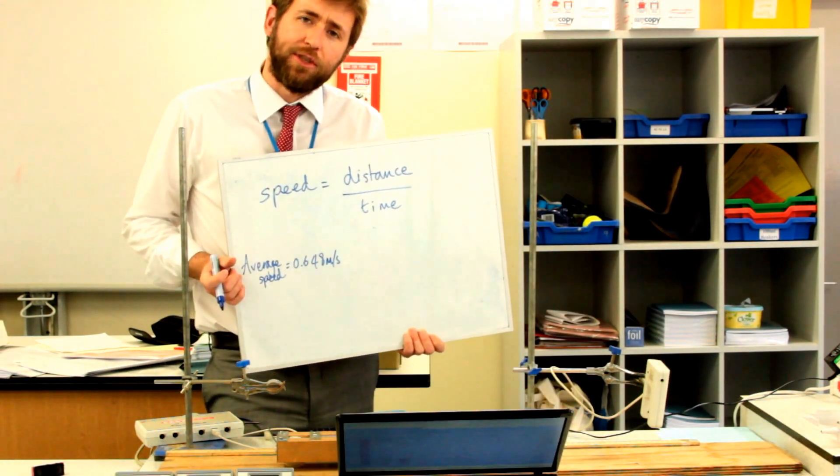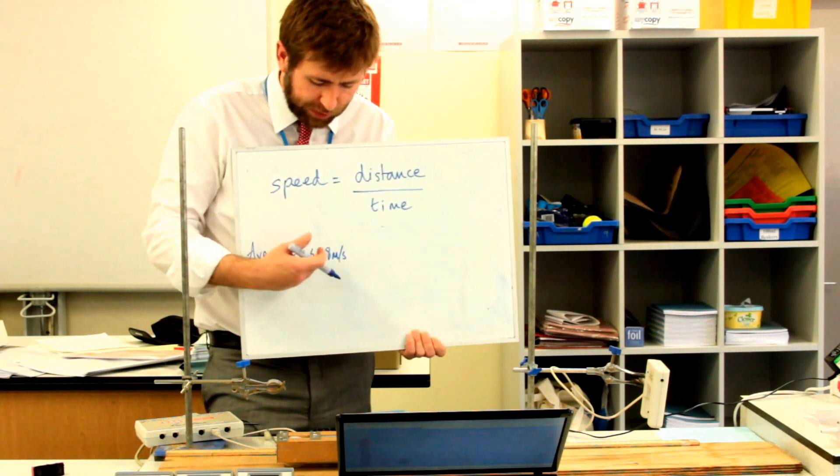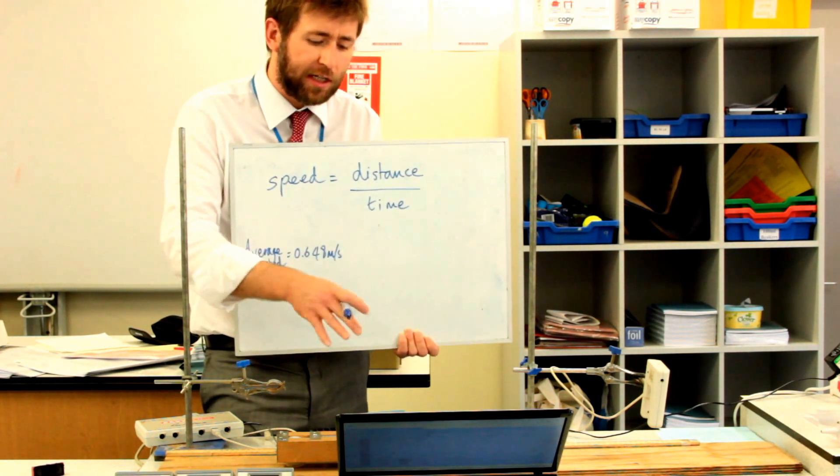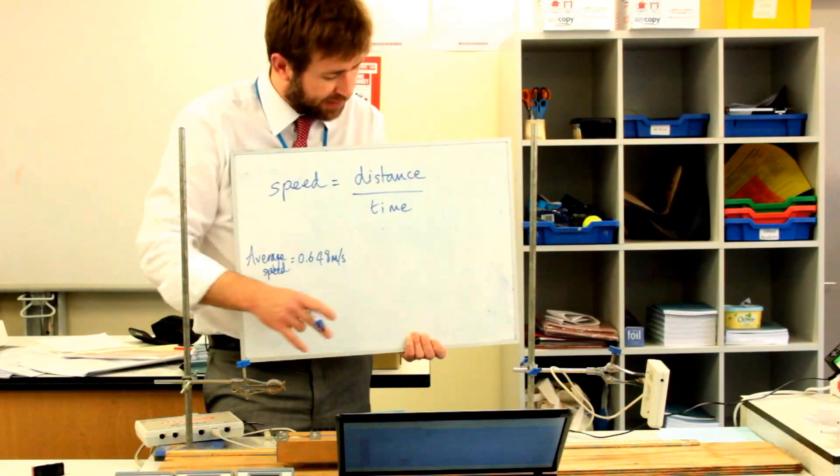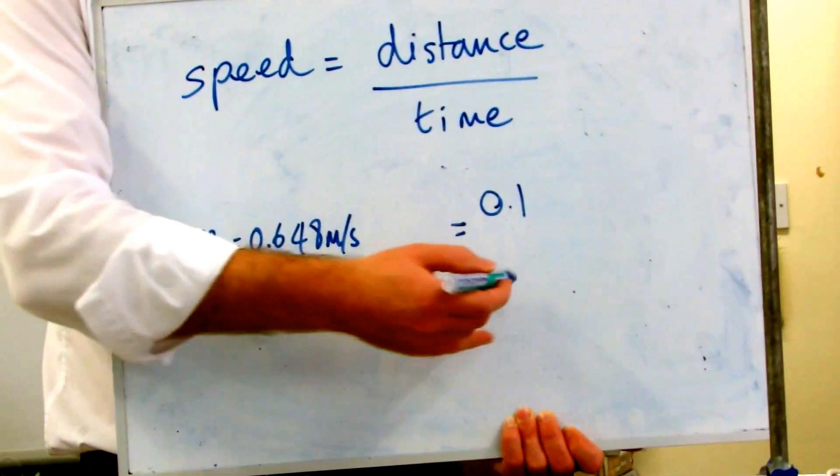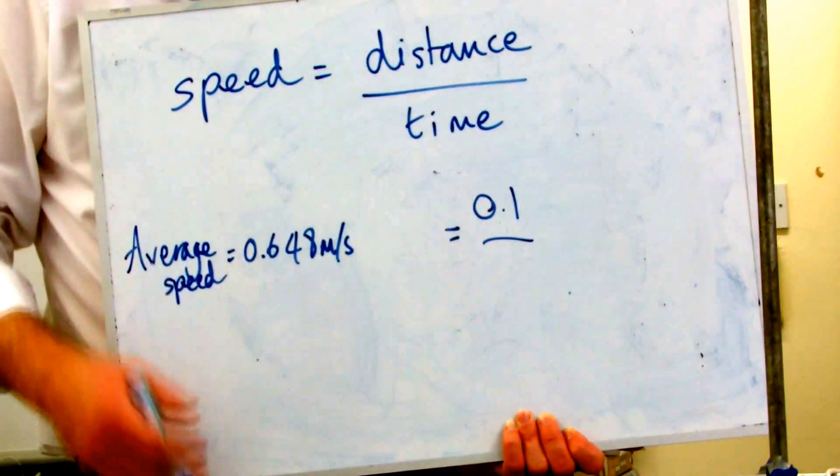So our average speed that we calculated by using the time from A to B was 0.648 meters per second. We changed it so we're just measuring 10 centimeters or 0.1, and we were only measuring the time it took to do that 0.1 meters at the start.